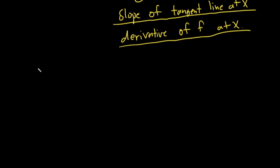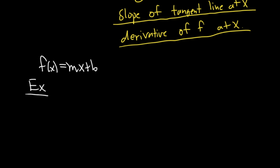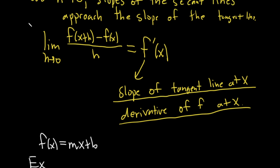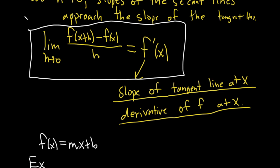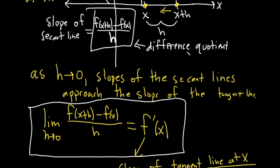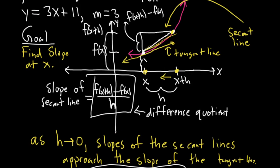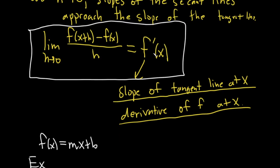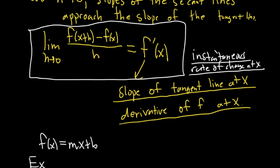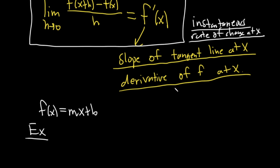Let's go ahead and do a really simple example just so you see how it works. You can also think of this as the rate of change at a particular point — it's the same thing as the slope at a point. So the derivative really has three names: instantaneous rate of change at x, the slope of the tangent line at x, and the derivative of f at x.